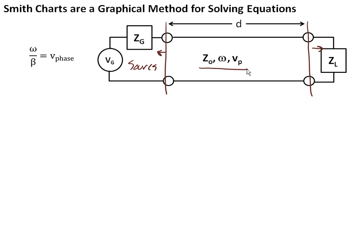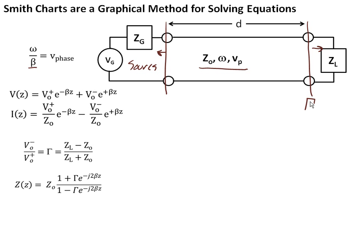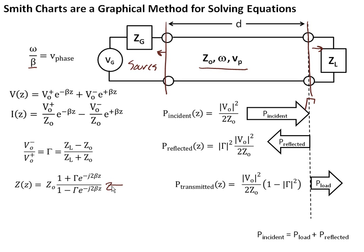It turns out we can calculate the propagation coefficient beta pretty easily if we're given the phase velocity and frequency. We know the solution of the waves on this line are a voltage wave and a current wave moving in the positive and negative directions. If we know the load and the characteristic impedance, we can calculate the reflection coefficient gamma, and with that reflection coefficient we can calculate the impedance of the line — the ratio between the voltage and current anywhere along the line — given this expression here. This is important because that input impedance determines the power, and we can calculate the incident, reflected, and power at the load once we know these other things.